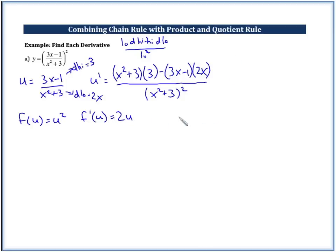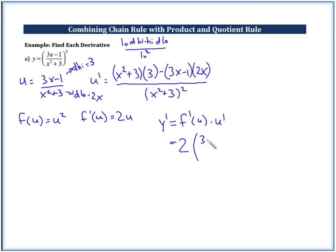y prime is going to equal — remember we're going to take f prime of u times u prime. So it equals 2u, and we can go ahead and write u in here. So we have 3x minus 1 over x squared plus 3, times u prime — all of this stuff right here.